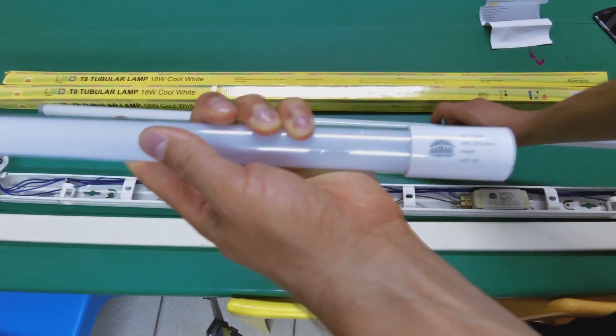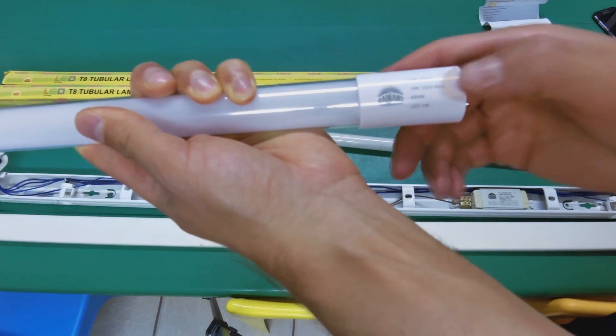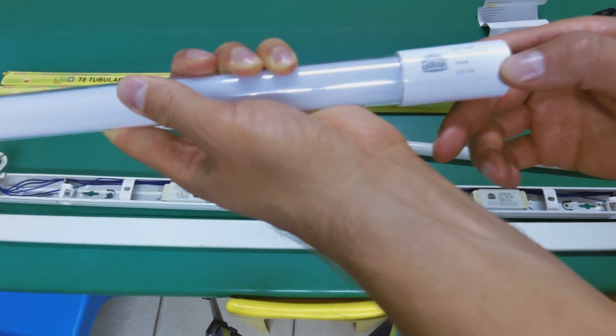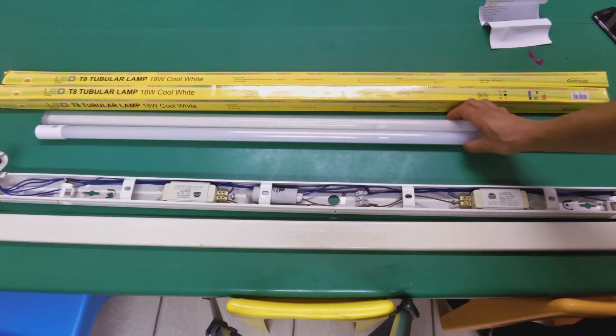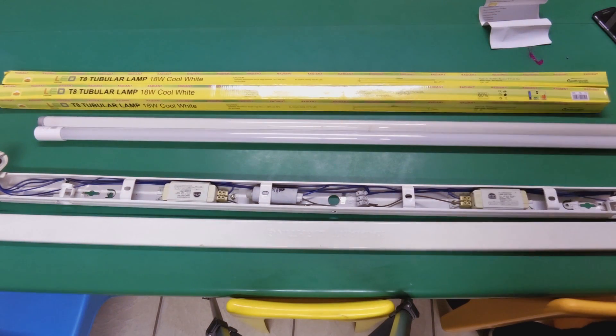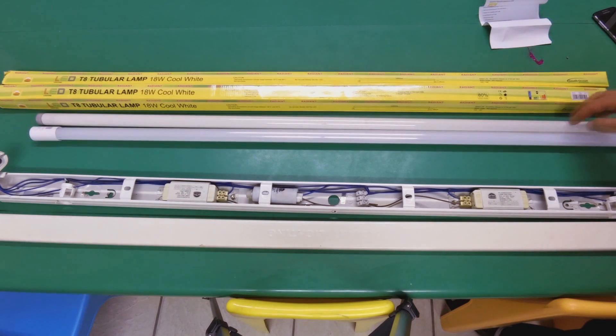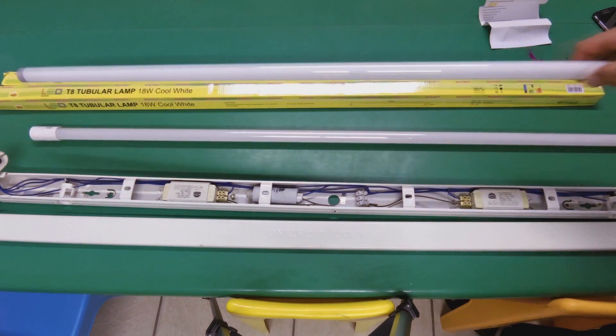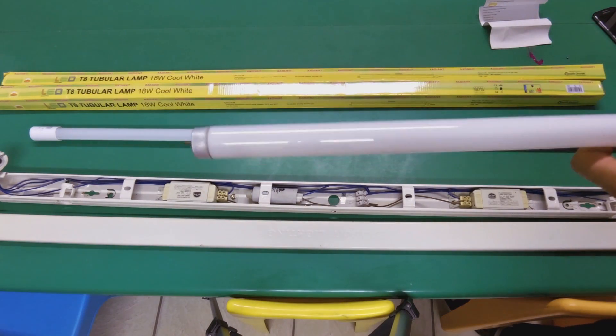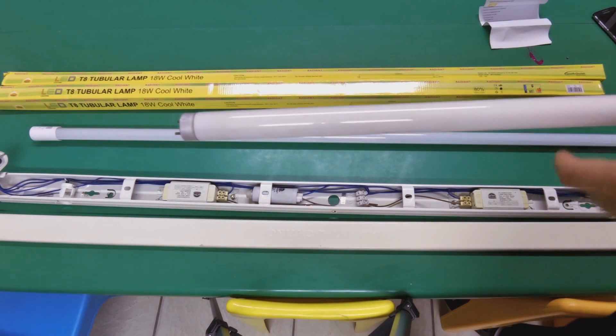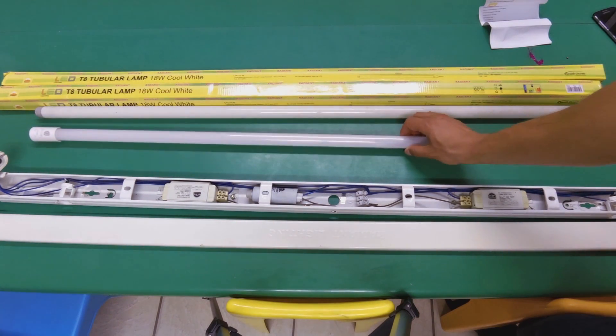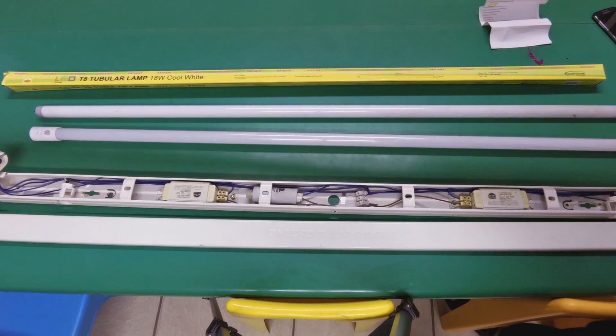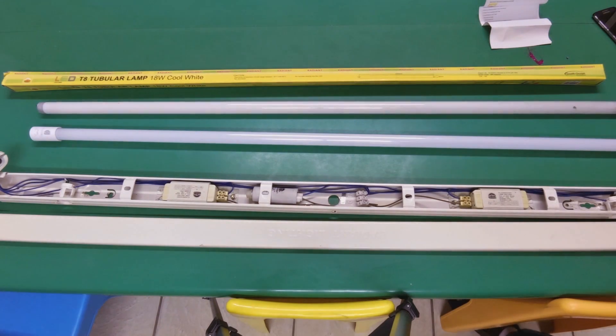Now the next important aspect about why one would change to an LED is the lifespan. The hours that are specified for a standard fluorescent light are far lower than the useful hours of an LED tube. So you should be able to get about five times the lifespan from an LED tube.